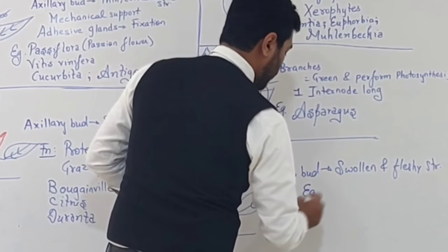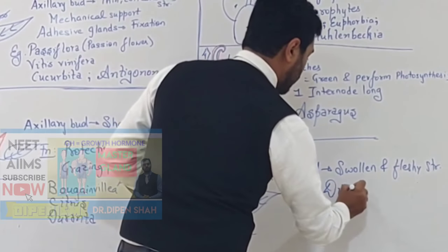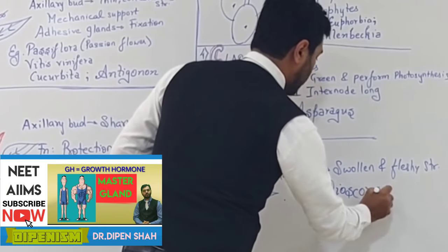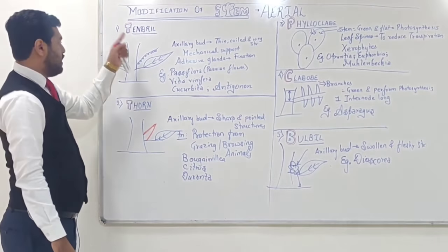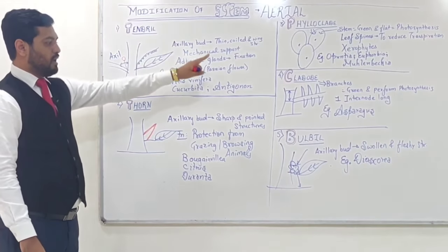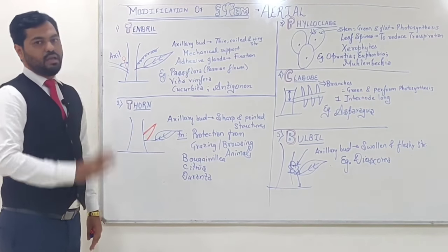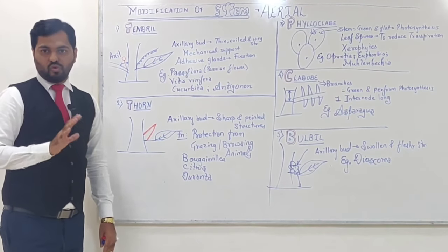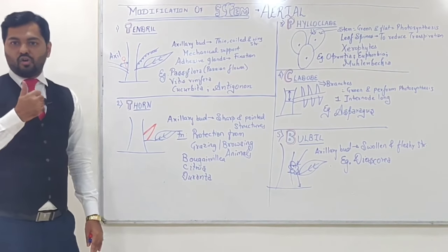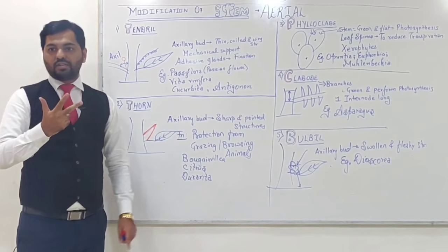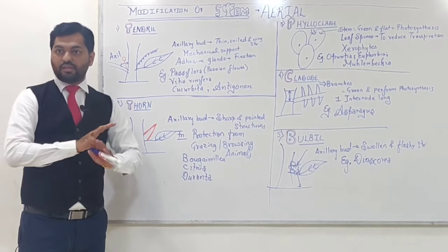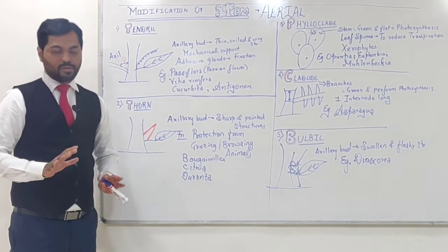Remember the timetable: PCB - tendril, thorn, phylloclade, cladode, and bulbil. All are aerial modifications of stem. Total: we studied 4 underground modifications, 4 sub-aerial, and 5 aerial - 13 modifications discussed so far. 13 modifications complete.